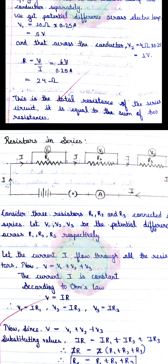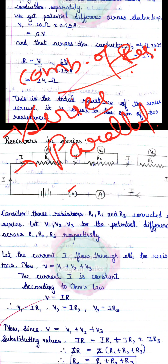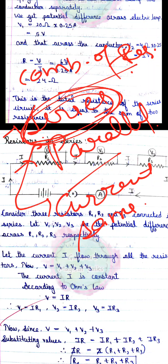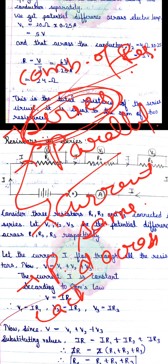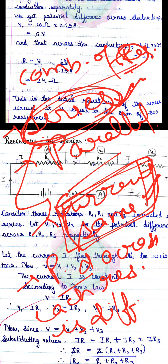Next is the combination of resistances। हमारे पास दो combinations होते हैं — one is the series combination and second is the parallel combination। Series combination में एक चीज हमेशा याद रखनी है: जब भी कोई circuit series में होगा, उसमें current same flow करेगा। और जो potential difference की value है, वो each resistor के across different होती है।